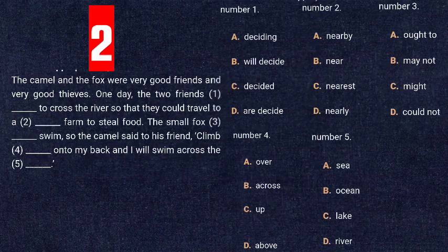The next question: the camel and the fox were very good friends. One day the two friends [blank] to cross the river so that they could travel to a farm to steal food. Looking at the tense — the passage is written in past tense — so we need the past form. Option C, 'decided,' is the correct one: 'the two friends decided to cross the river so that they could travel.'